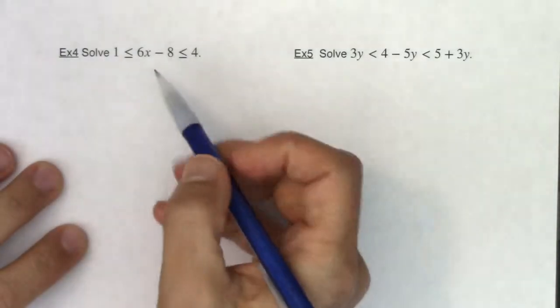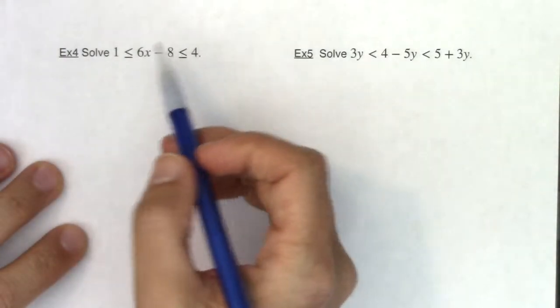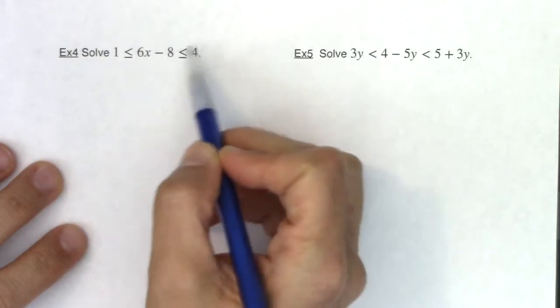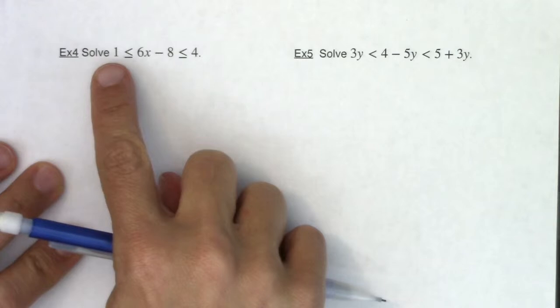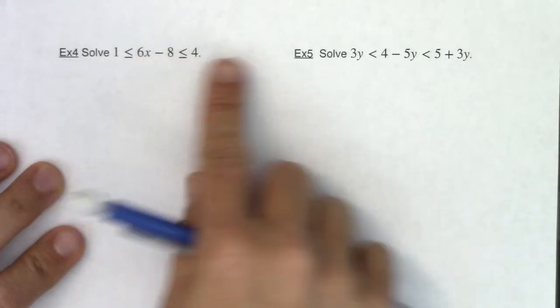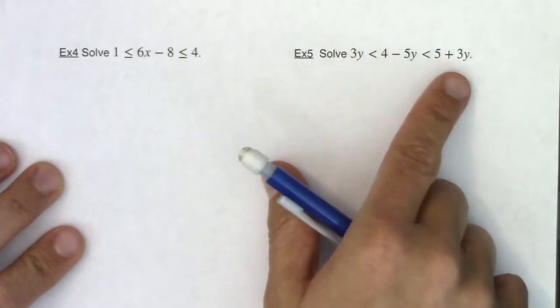Okay, so when you have a three-part inequality, it literally means now you've got a left, a middle, and a right part. So you can see in both of examples four and five, left part, middle part, right part, left part, middle part, right part.